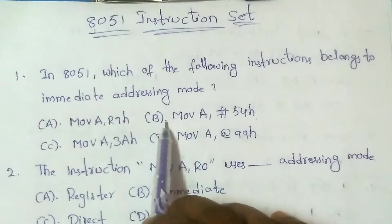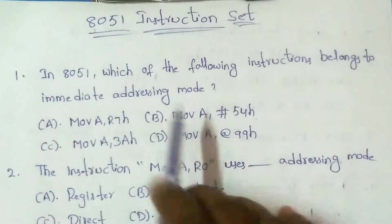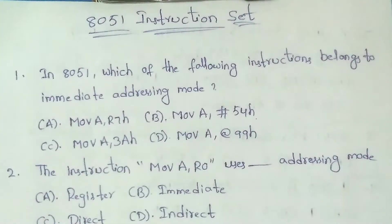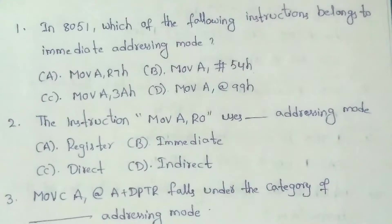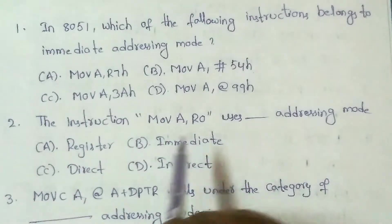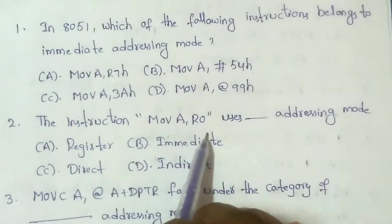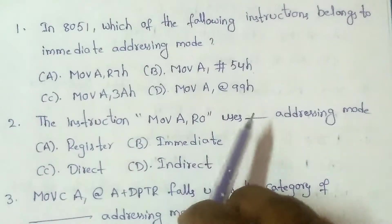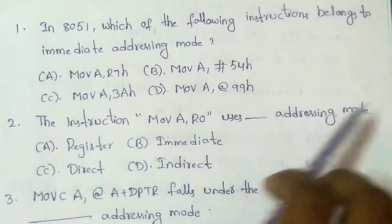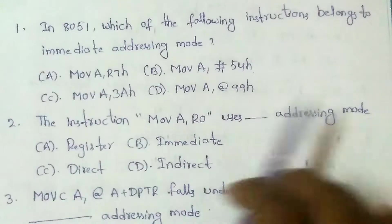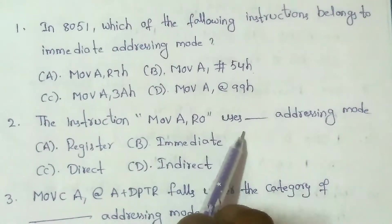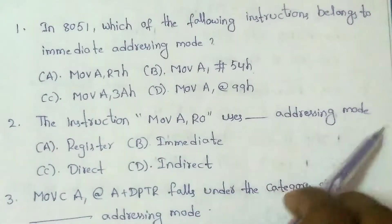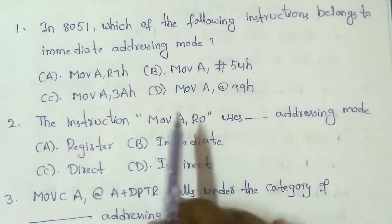Next question: The instruction MOV A, R0 uses which addressing mode? MOV A, R0 uses register addressing mode, since R0 is a register operand.